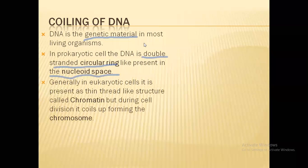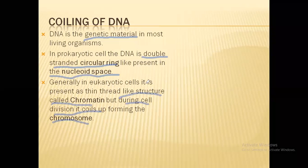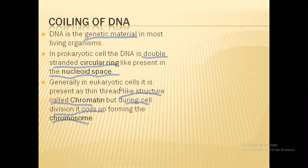Coiling occurs when chromosomes are formed. In eukaryotic cells, DNA is present as thin thread-like structures called chromatin. When the cell divides, it coils up to form the chromosome. A common exam question is: why does DNA coil into a chromosome? When chromatin is in its normal form, it contains genes.